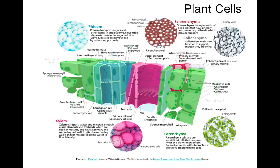Collenchyma cells function in support of the plant tissue because their primary cell walls are somewhat thicker than those of parenchyma. These are also alive at maturity.